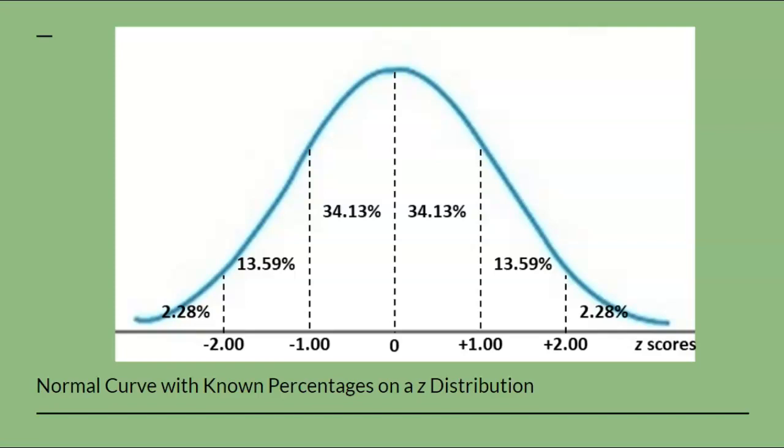The z-score itself indicates the number of standard deviations that a score is above or below the mean. This graph shows the known percentages under the normal curve for two standard deviations above and below the mean.